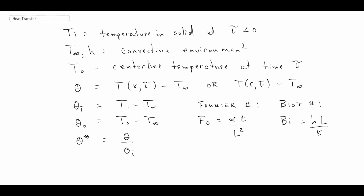Finally, we'll be evaluating heat loss in the solids. Heat loss is referenced to some value Q-naught, which is rho times C times V — essentially MC times delta-T — where delta-T is the initial temperature minus the free stream. This represents the total potential change in energy going from the initial state to the new free stream state. Ultimately, in time, the entire solid will eventually go to T-infinity once all the transients have gone away.